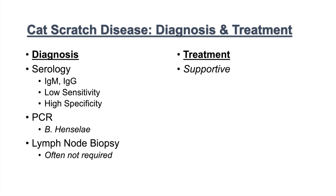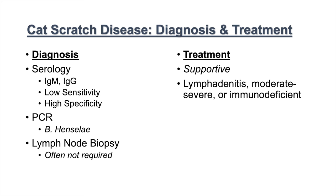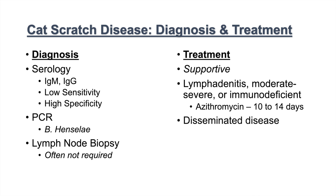Treatment is generally supportive, since this is often a self-limiting disease. However, if there's moderate to severe lymphadenitis, if the patient is very ill, or if the patient is immunodeficient, we want to treat with azithromycin for 10 to 14 days. For disseminated disease, we give azithromycin or doxycycline with rifampin. That's the key difference — we add rifampin for disseminated disease.